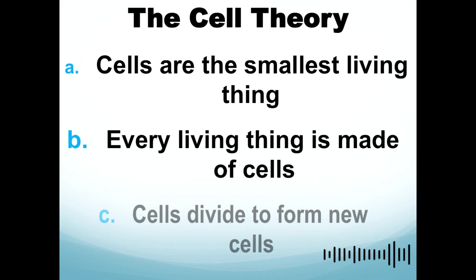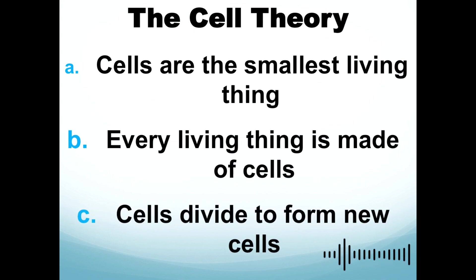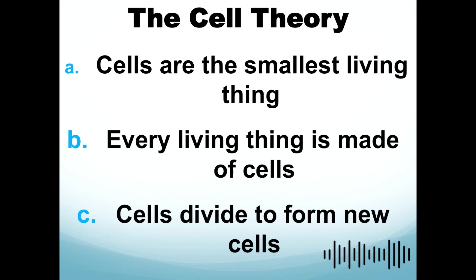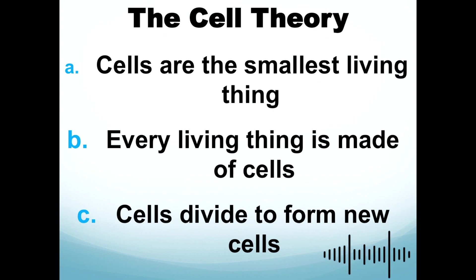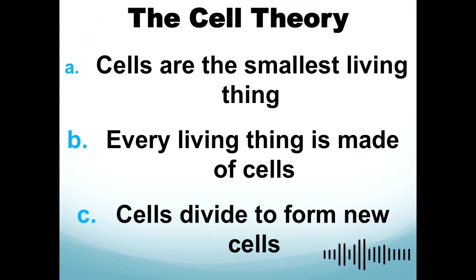Because of these discoveries from Robert Hooke and Anton van Leeuwenhoek, scientists later discovered more about cells using more powerful microscopes. This led to the development of cell theory during 1839 by Theodor Schwann and Matthias Jakob Schleiden. They established that cells are the smallest living things — microscopic, not visible to the naked eye — and that every living thing is made up of cells.